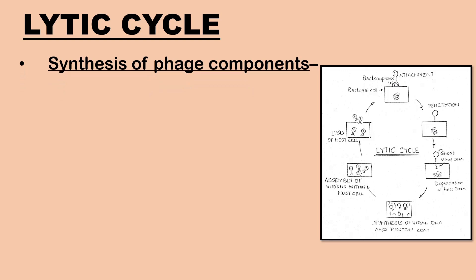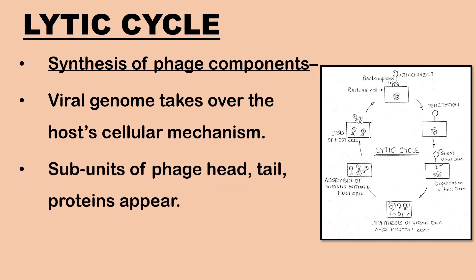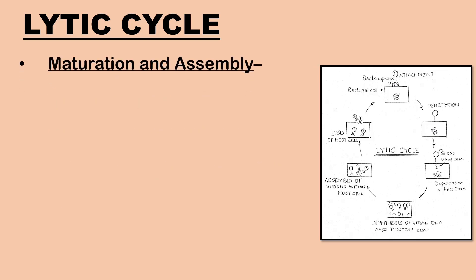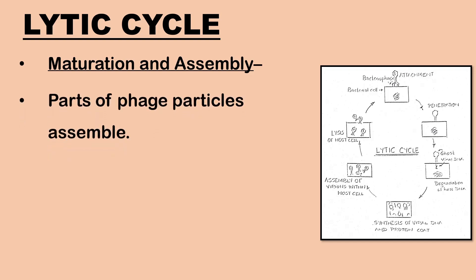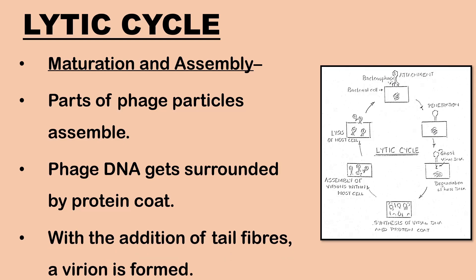The third stage is the synthesis of phage components. The viral genome takes over the host cellular mechanism to produce components of new virus particles. The subunits of phage — head, tail, and proteins — appear. The nucleus and cytoplasm also contain the components of the phage. Fourth stage is maturation and assembly. On maturation, the head and tail protein of phage DNA spontaneously assemble and each component of phage DNA gets surrounded by a protein coat. The tail structures are added, resulting in the formation of a virion or infective virus particles.